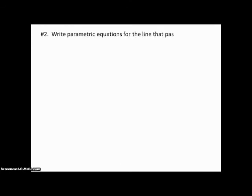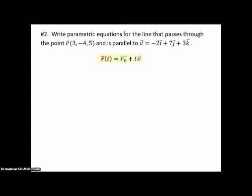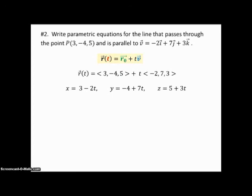Example 2: Write parametric equations for the line that passes through a given point and is parallel to a given vector. They're essentially giving us P₀ and v directly. Using our vector equation r(t) = r₀ + tv and filling in the given values, we combine the first components to get x, the second for y, and the third for z. Those are your parametric equations.